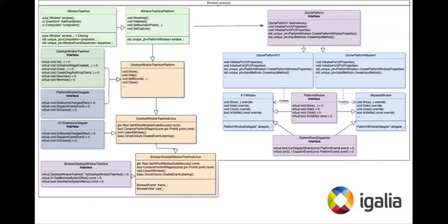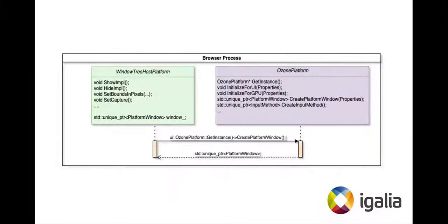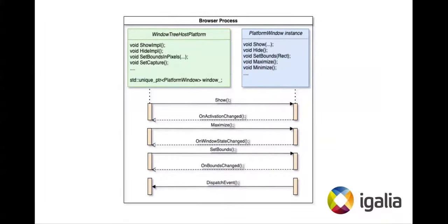X11 basically does the same. Once Aura initializes Ozone and creates a platform window, it can interact with Ozone using the Platform Window interface. In its own turn, Ozone communicates back to Aura using the Platform Window Delegate interface. For example, Aura can ask Ozone to show the window, maximize it, set bounds, and so on. In response, it can receive activation change, window state changed, and other calls.